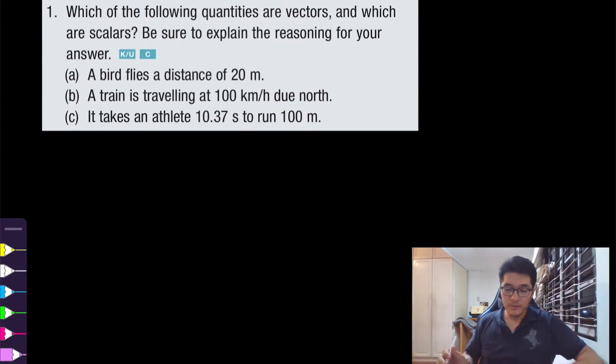Which of the following quantities are vectors and which are scalars? Be sure to explain the reasoning for your answer. So let's see what it says for part A. A bird flies a distance of 20 meters. So first let's try to recall quickly what is a scalar quantity and what is a vector quantity.